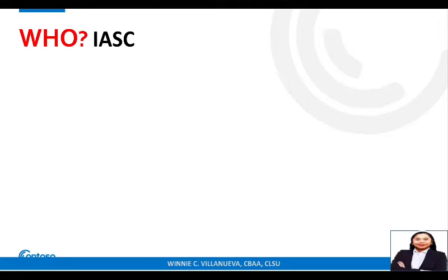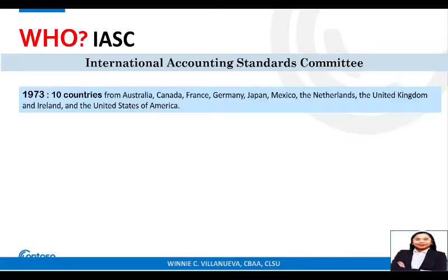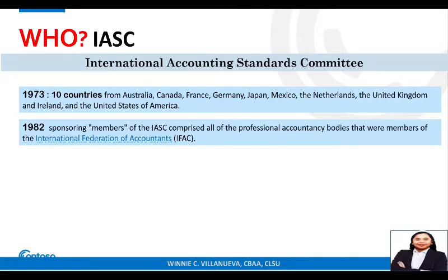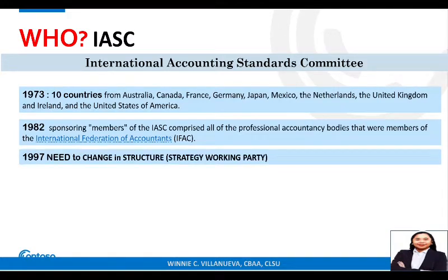The International Accounting Standards Committee was organized in 1973 by 10 countries. By 1982, the members of the IASC were already part of IFAC. The IASC, in 1977, was actually the one who organized IFAC — the International Federation of Accountants.